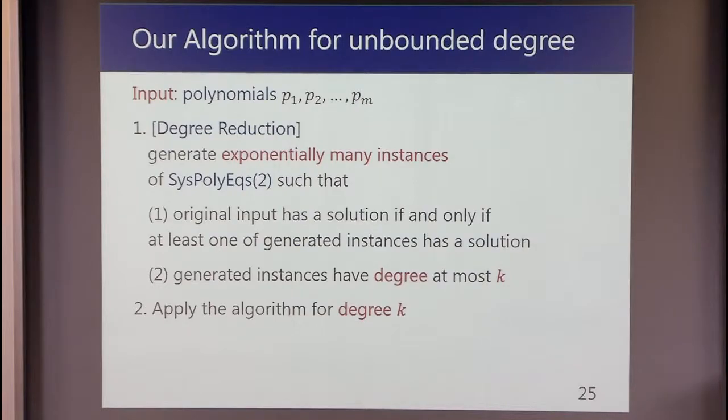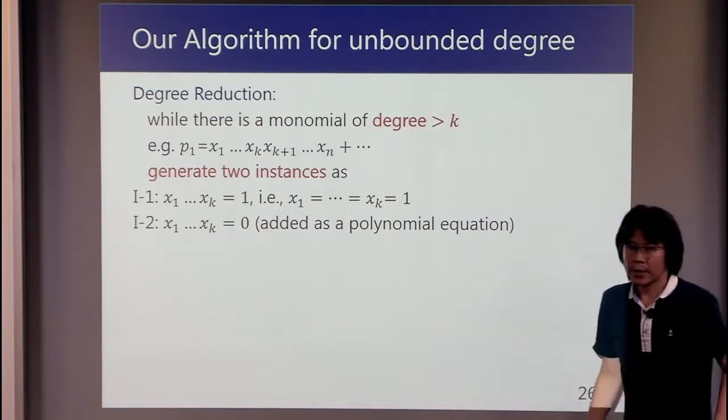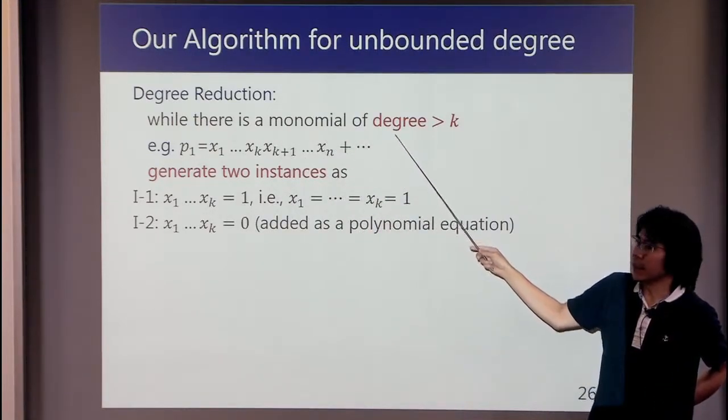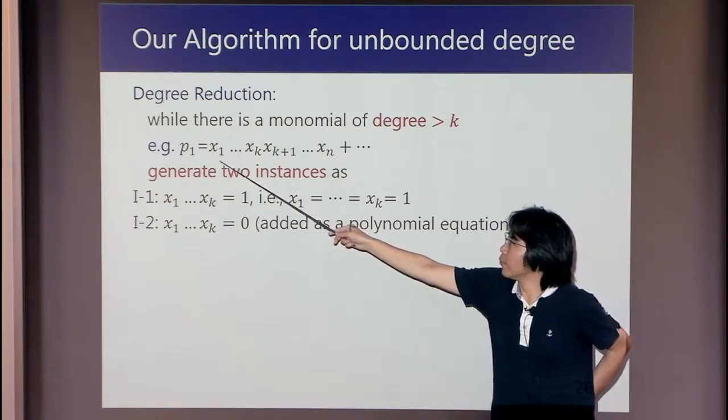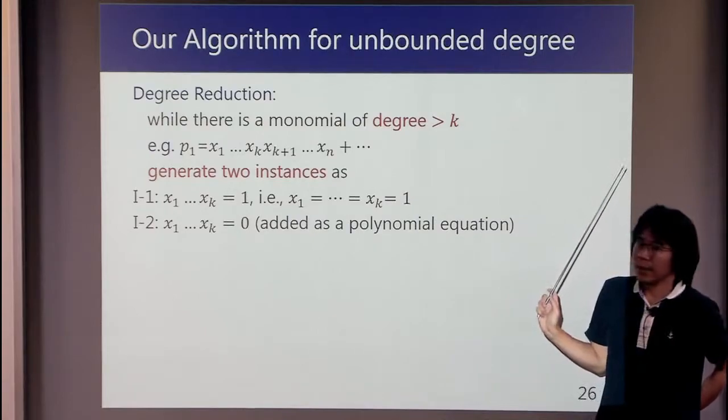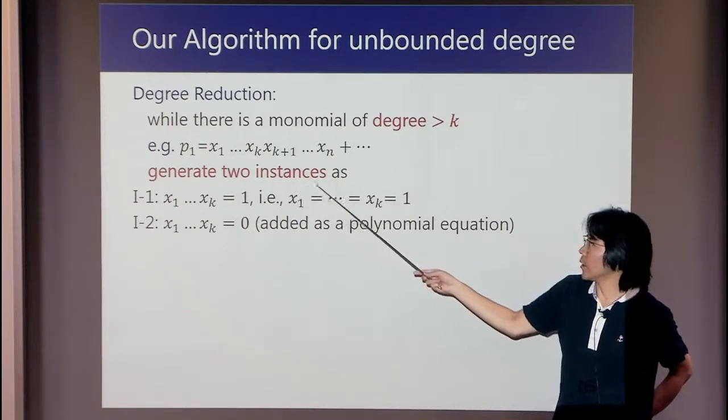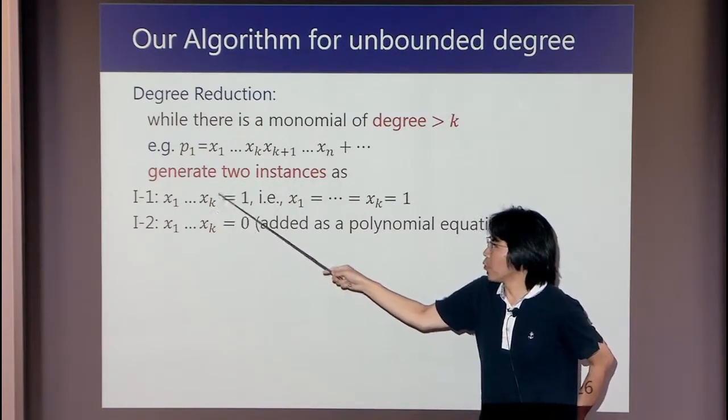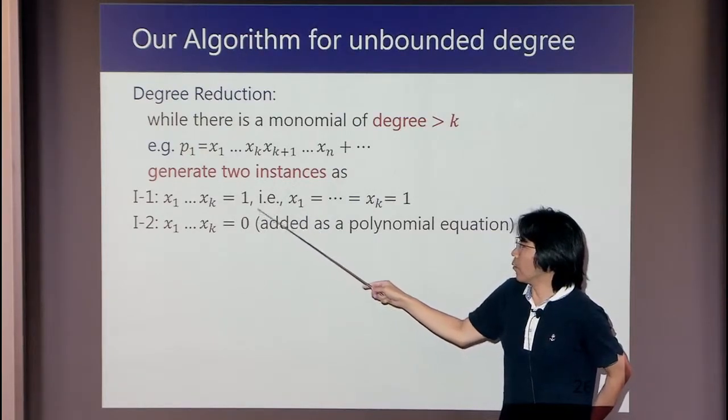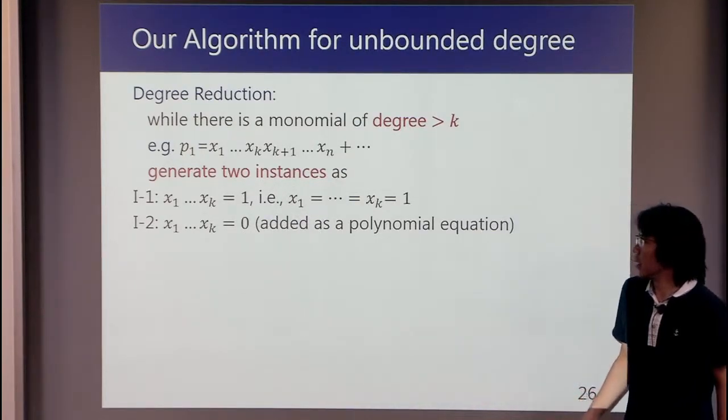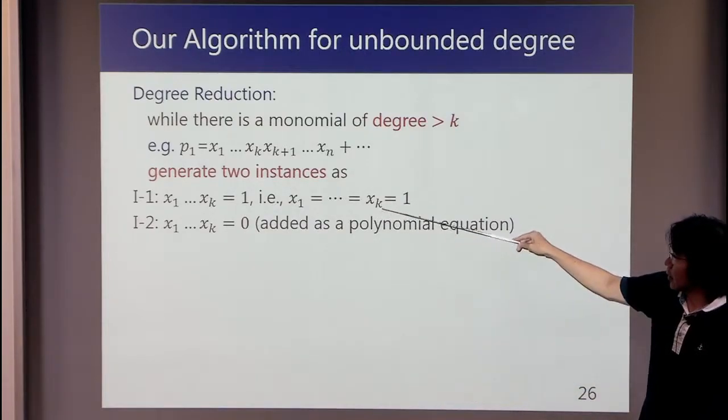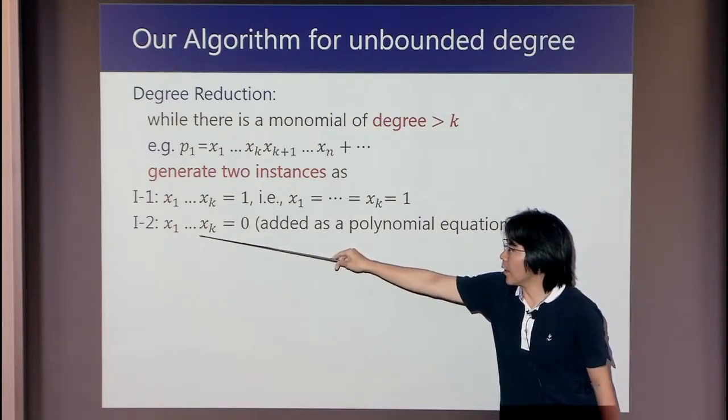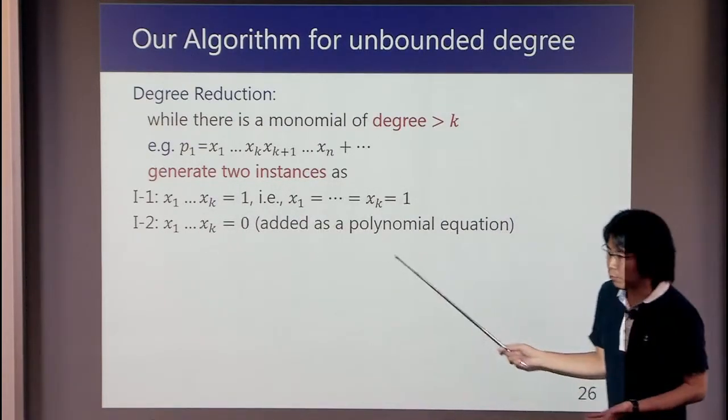What we do in degree reduction is a fairly simple idea. While there is a monomial of degree more than k, such as product of x₁ through xₙ, we generate two instances I₁ and I₂ by setting this x₁ through xₖ—product of x₁ through xₖ—is 1 or 0. In the first case, this implies this. And in the second instance, we just add this as a new polynomial equation.